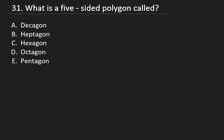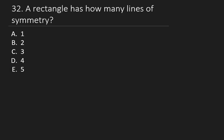Question 31: What is a five-sided polygon called? The answer is a pentagon. Question 32: A rectangle has how many lines of symmetry? The answer is B: 2.